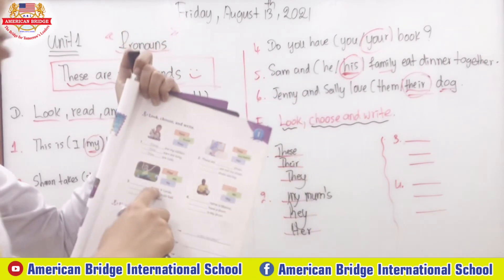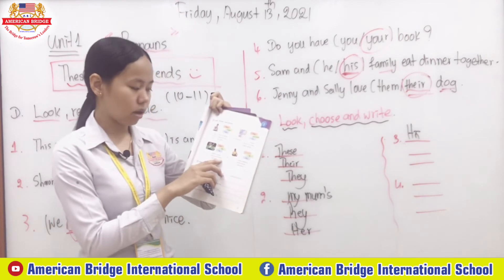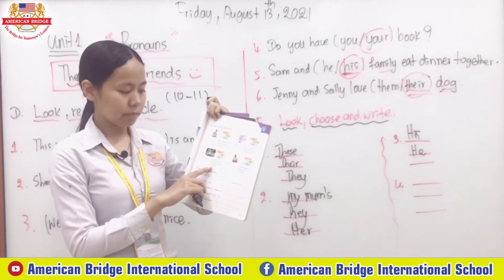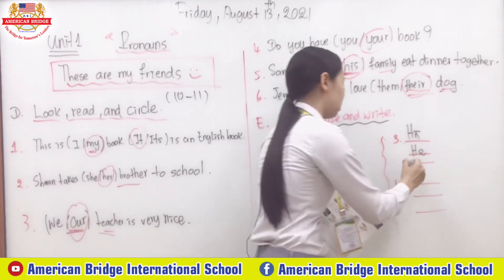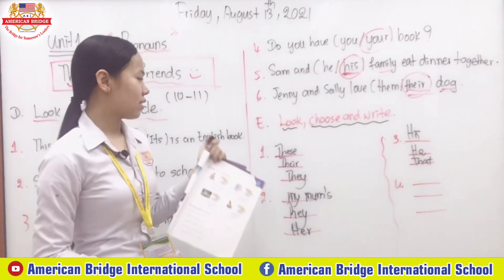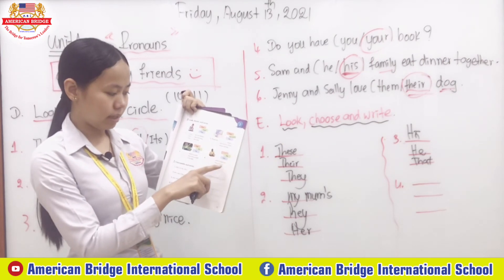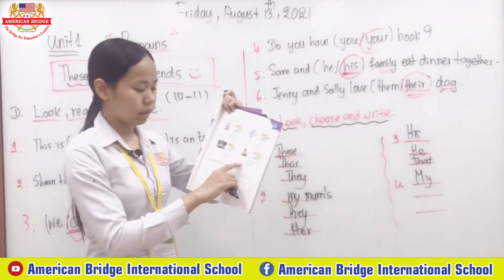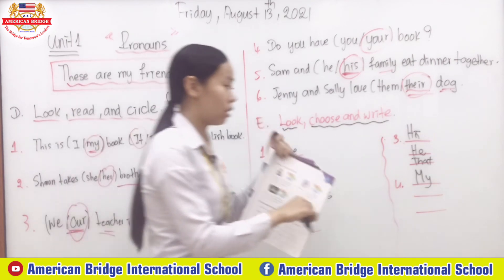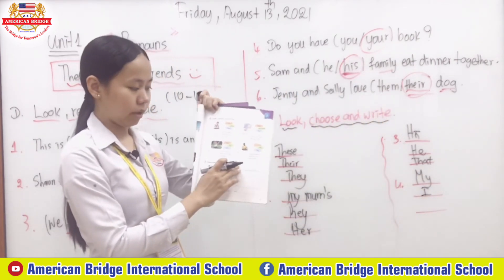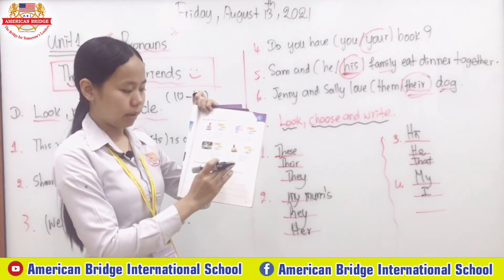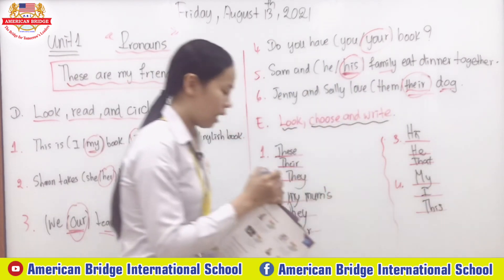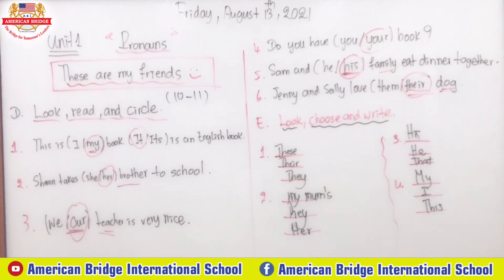Number three: 'His name' — using possessive adjective, not 'he names.' Then: 'He has a soccer ball' — subject pronoun 'he.' And: 'That is his ball' — using demonstrative pronoun 'that.' Number four: 'My name' — possessive adjective. 'I have a drum' — subject pronoun 'I.' And: 'This is my drum' — demonstrative pronoun 'this.'